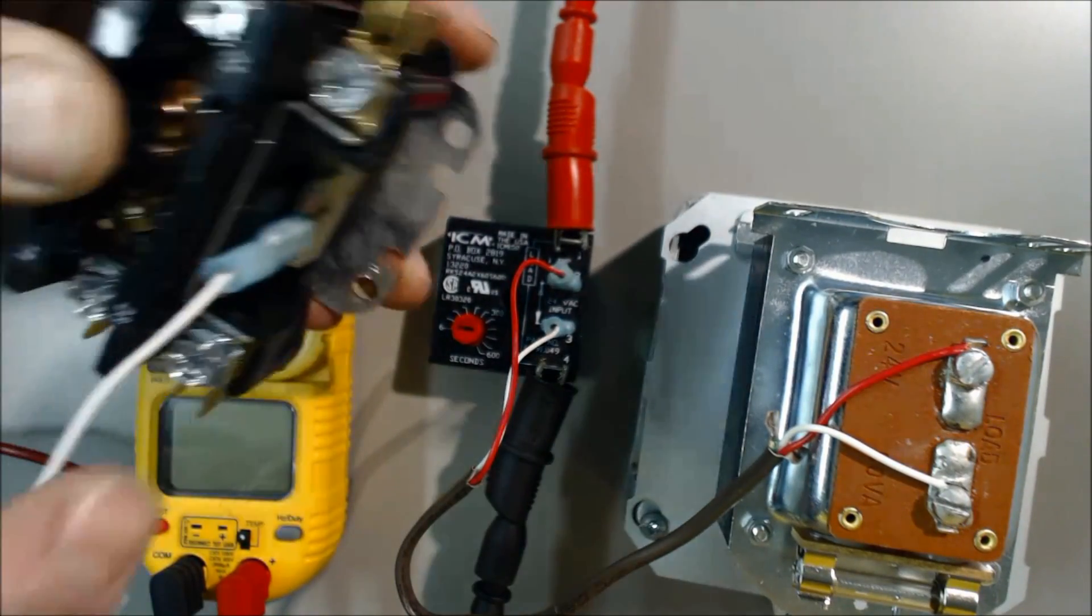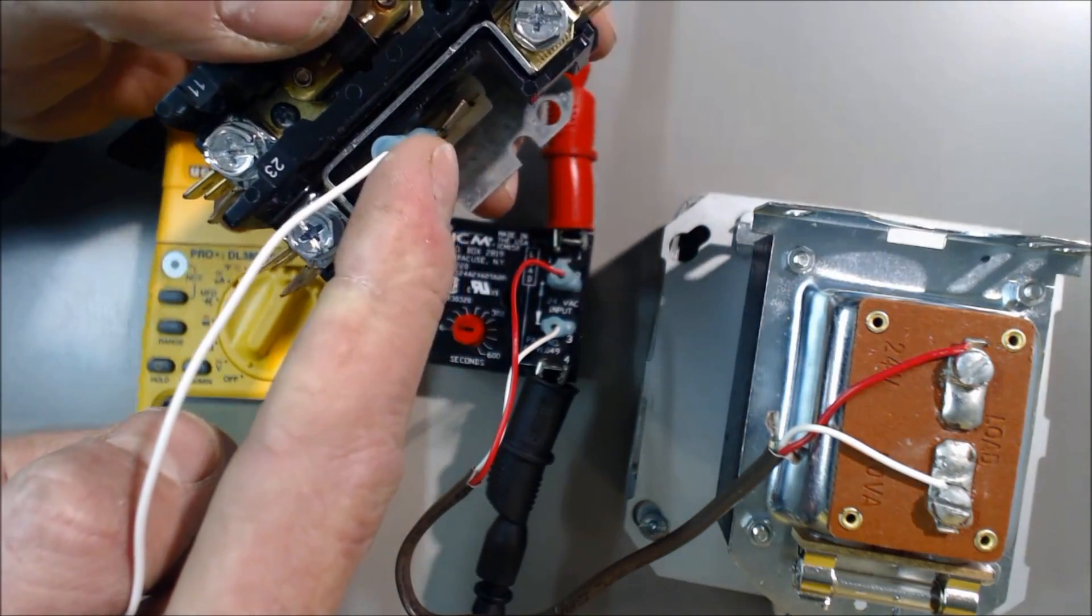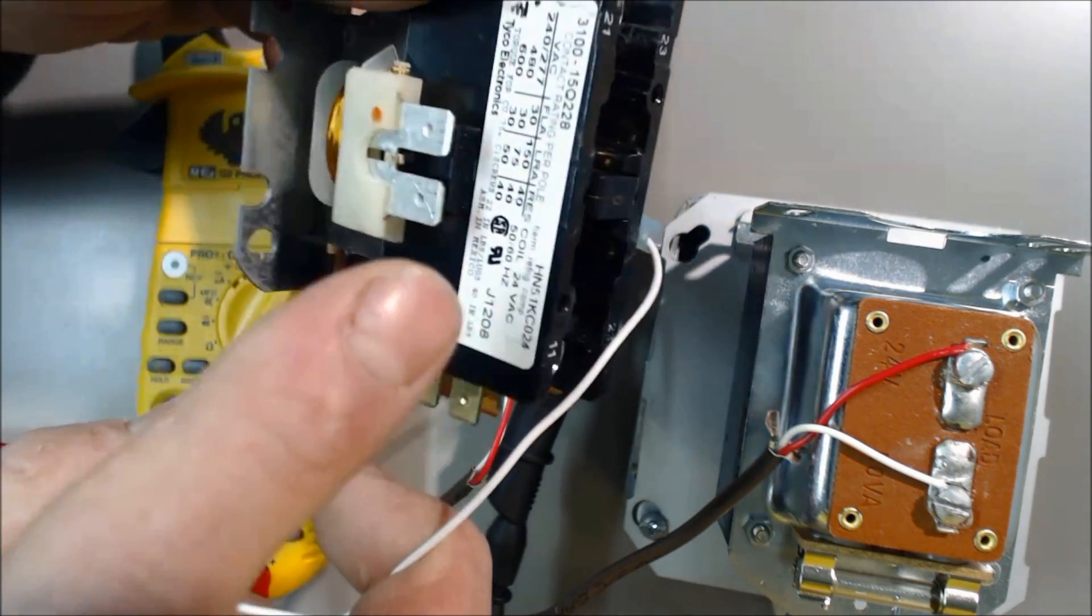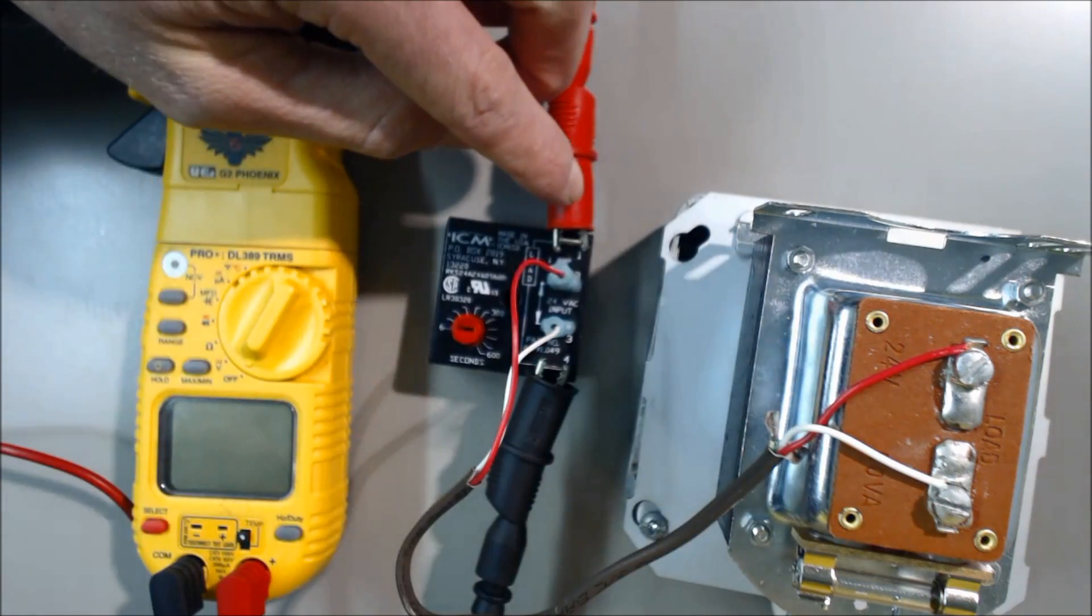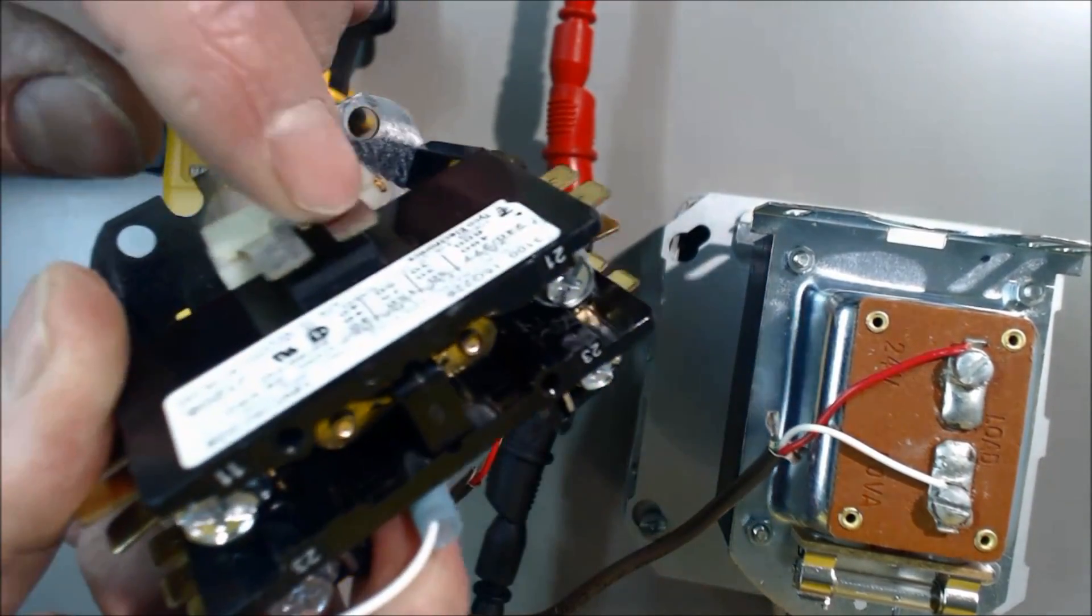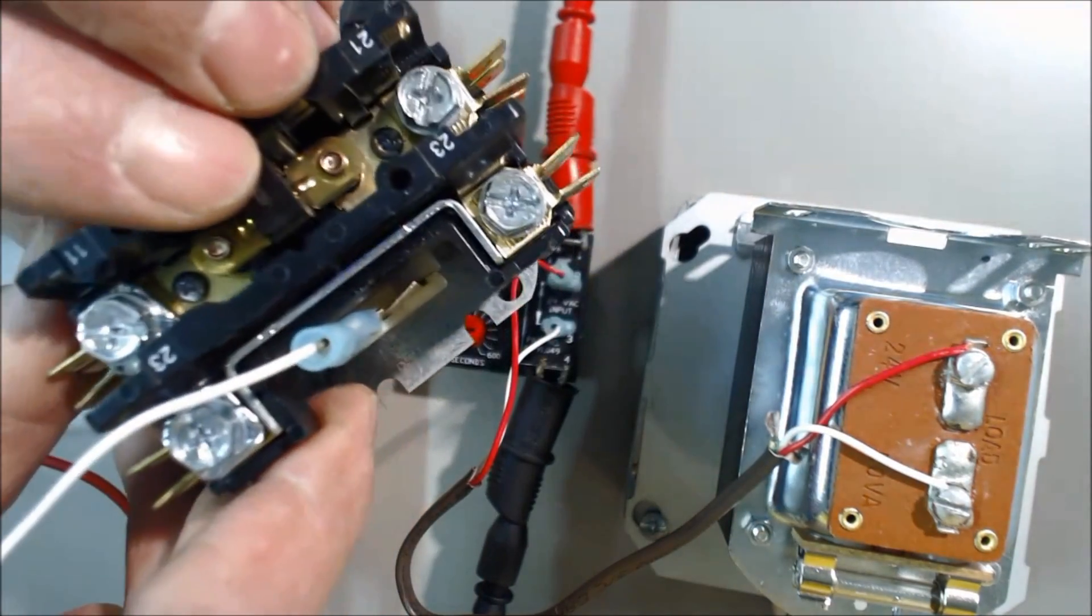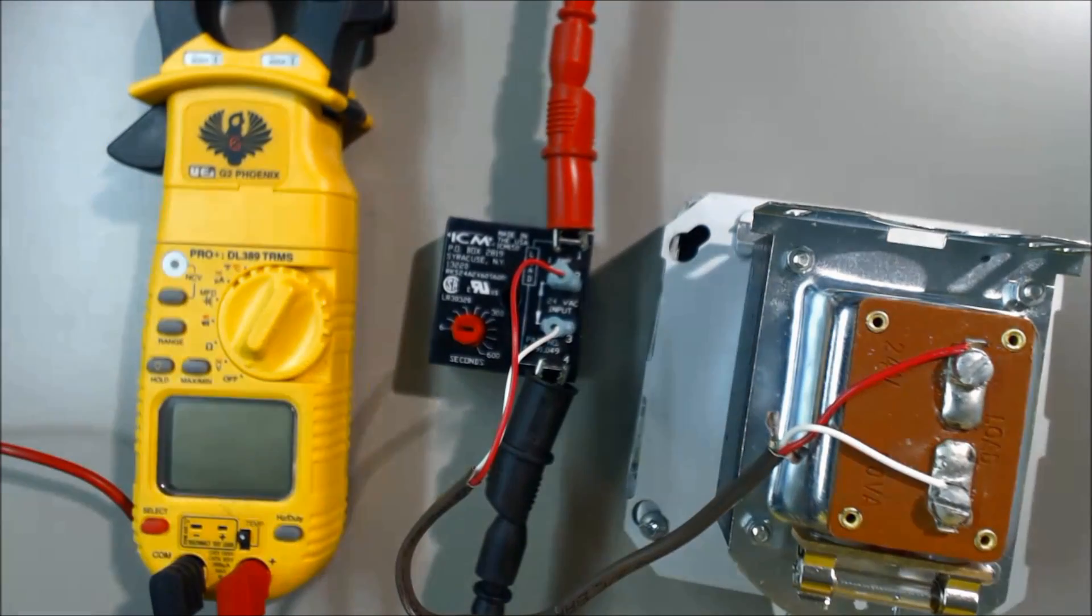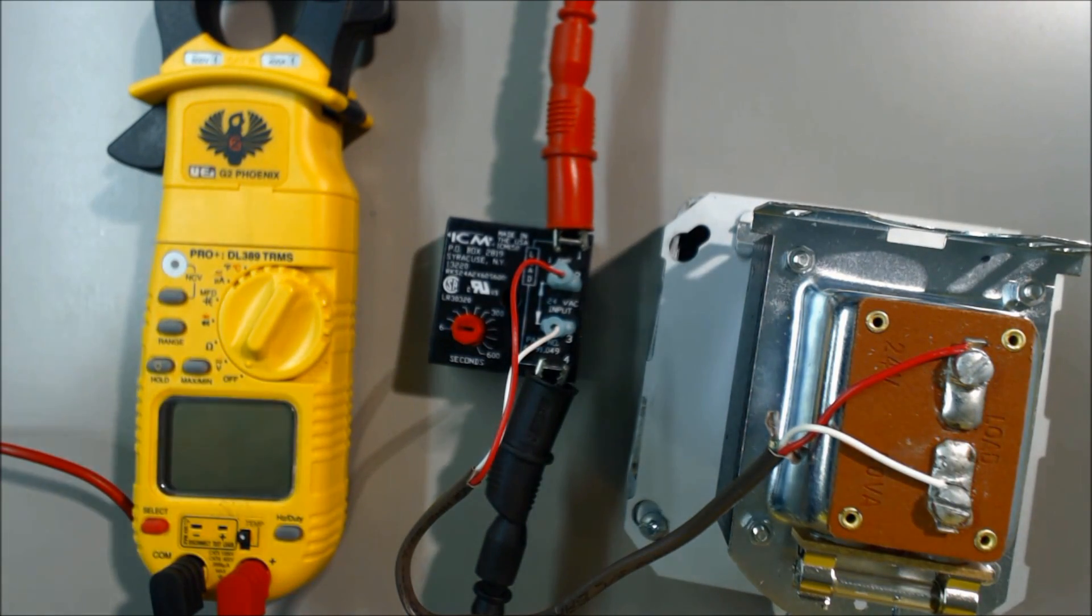What you have then is this side would be your common, that would get jumpered to there, and then you have your hot, which will be coming out of here. It first comes in here, then comes out, and then you can wire it to your contactor. What that'll do is it'll wait six seconds before this sucks down. That's it. Find us again at acservicetech.com.